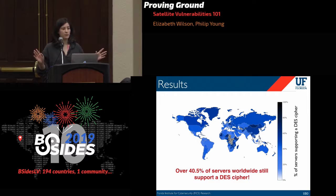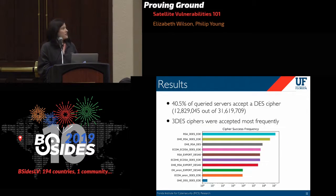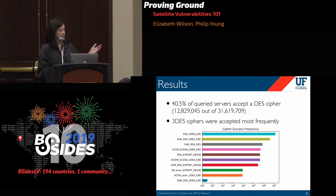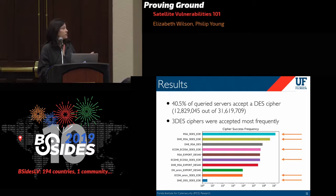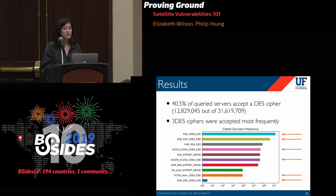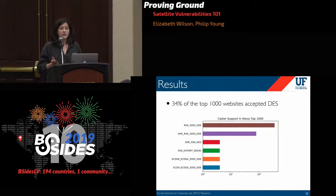Feel free to jump in with questions — you don't have to wait until the end. Over 40% of servers we queried accepted some form of DES cipher, with Triple DES being vastly the most supported. It was just deprecated last year, so that's probably to be expected. However, we did see a substantial and worrying amount of DES-56 and DES-40 being accepted.